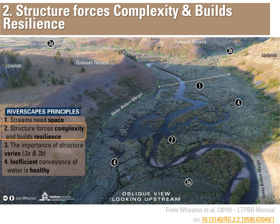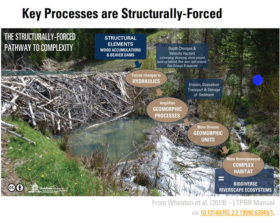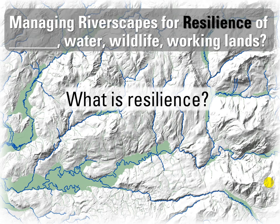Structure is going to be the key ingredient that forces complexity. Things like beaver dams that change hydraulics amplify geomorphic processes, leaving behind more diverse and complex habitat that supports more biodiverse riverscapes.